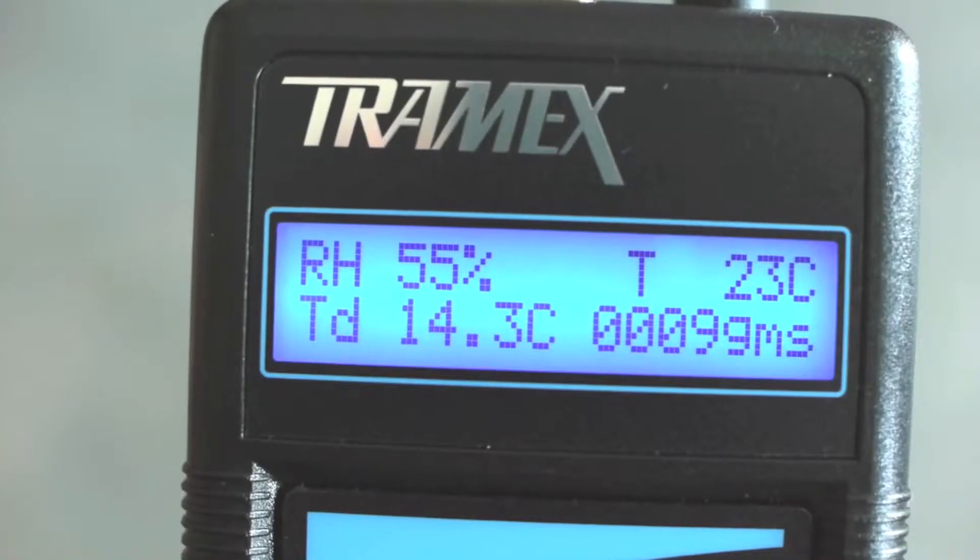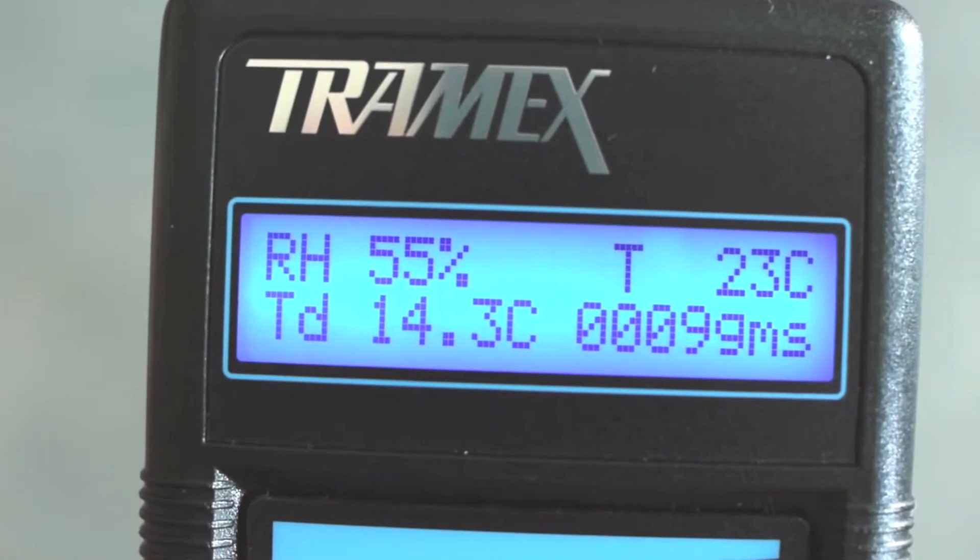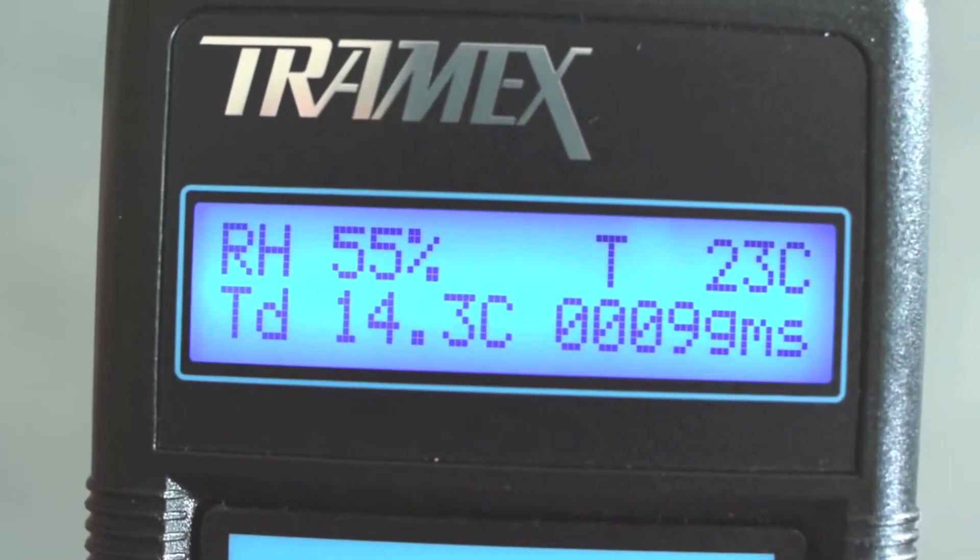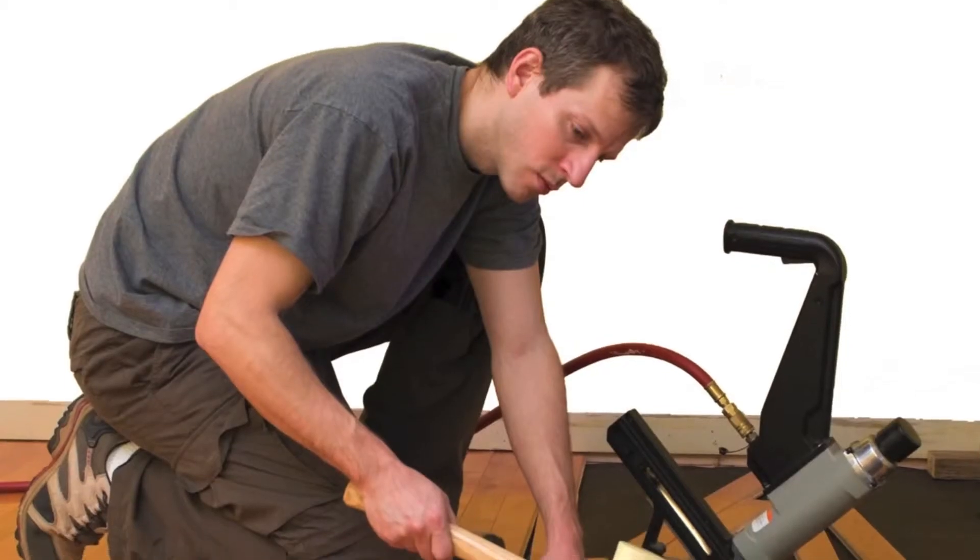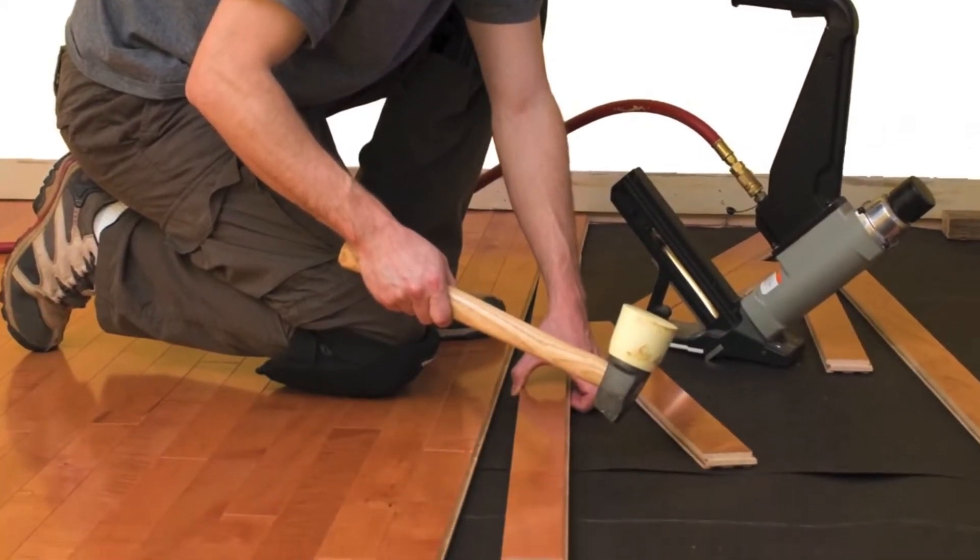The meter displays the relative humidity, temperature, dew point and mixing ratio, allowing the user to assess the environmental ambient conditions within the building, making sure they are suitable for installing a floor covering.